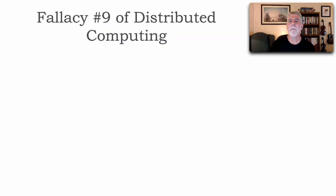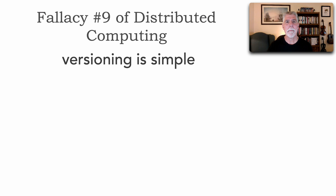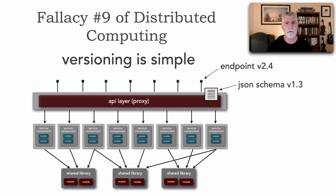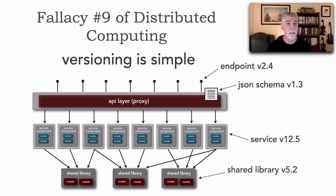I wanted to offer you fallacy number nine of distributed computing, and that fallacy is that versioning is simple. Take, for example, a basic microservices ecosystem. With microservices alone, we have four main artifacts, at a minimum, that we have to worry about versioning: we may version a particular endpoint on the API gateway, we may version a strict contract in JSON or XML schema, we may have different versions of a service, and also multiple versions of shared libraries.